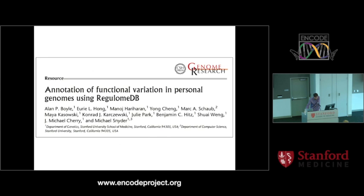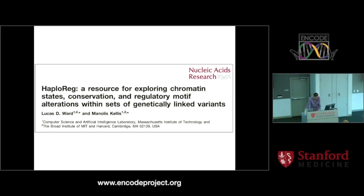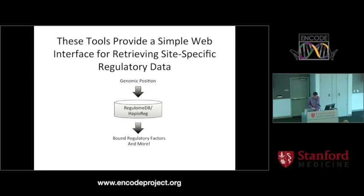Let's go through RegulumDB. The first author on this paper, Alan Boyle, was the creator of RegulumDB. You can feel free to email me or him if you have any questions. The general idea is that it's a web-based tool which provides a very simple interface for retrieving site-specific regulatory data. If you have a genomic position or region in the genome that you want to know more about, you can use the web interface, input it into the database, and it outputs all the bound regulatory factors and additional information from the ENCODE project.